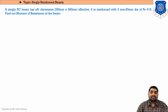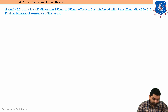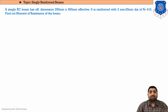It is reinforced with three numbers of 20 mm diameter bars. In the previous session the AST, that is area of steel in tension, was not prescribed, but here the total number of bars is given. There are three numbers of 20 mm diameter bars of grade Fe 415 — that is HYSE steel, or high yield strength deformed bars. The question is: find out the moment of resistance of the beam.